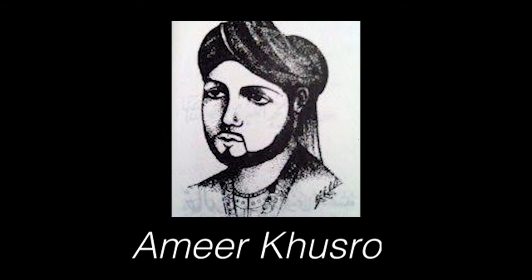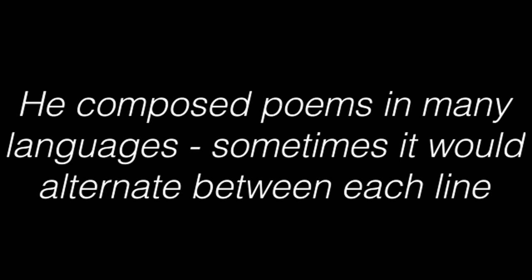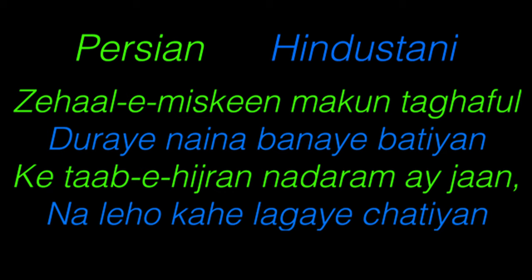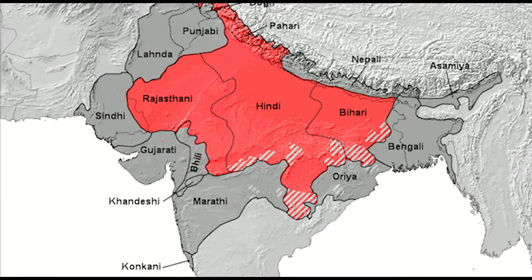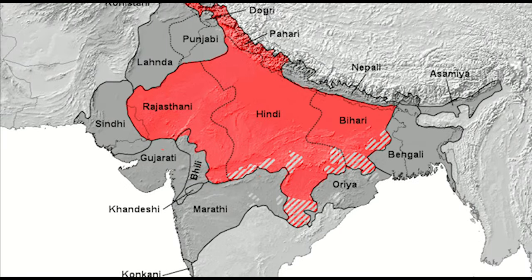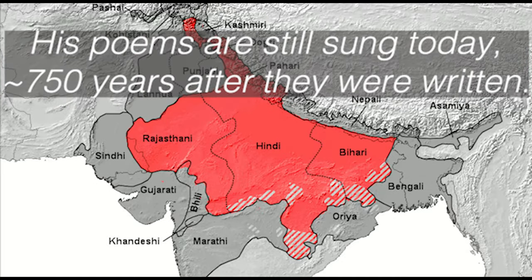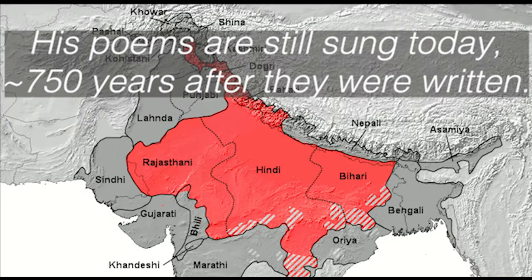Urdu's first poet, Amir Khusrau of Persian descent, composed folk songs, riddles and couplets in Persian, Arabic and mixed speech. His poems would feature multiple languages like Persian and Hindustani. This mixed speech was what eventually evolved into Urdu. By the late 11th century, Hindustani had become the lingua franca of most of northern India. His poems are still sung around India and Pakistan, 750 years after they were first written.